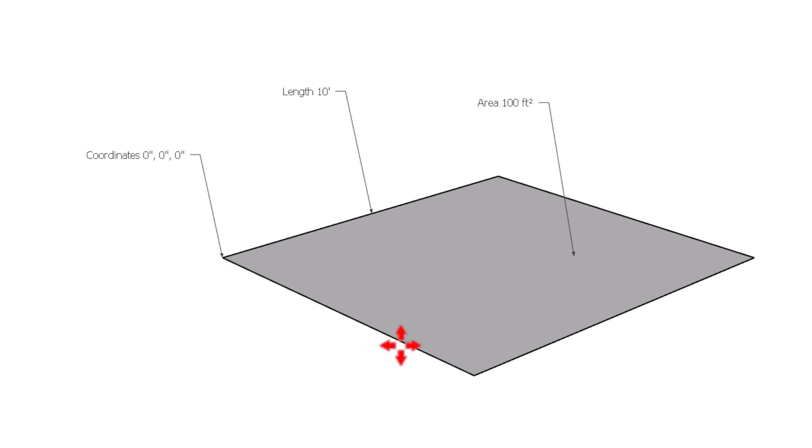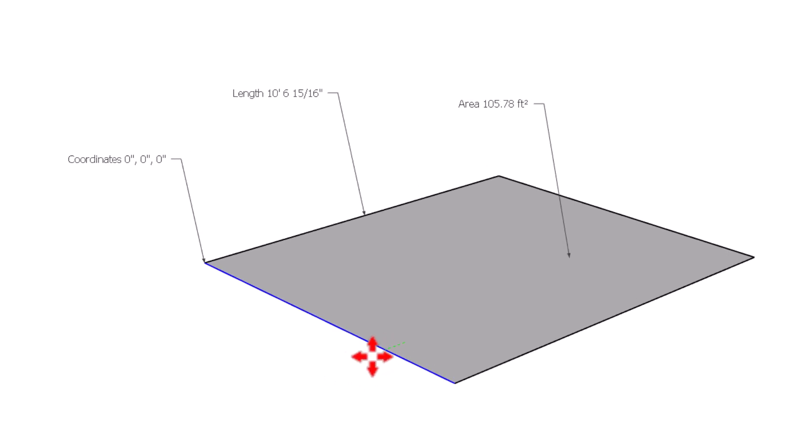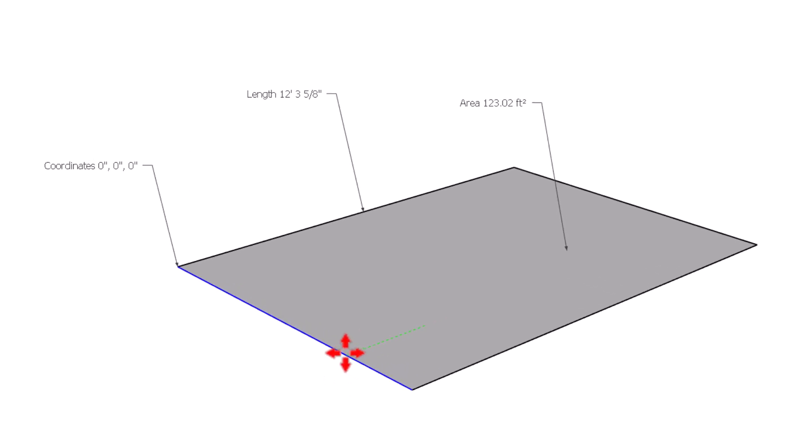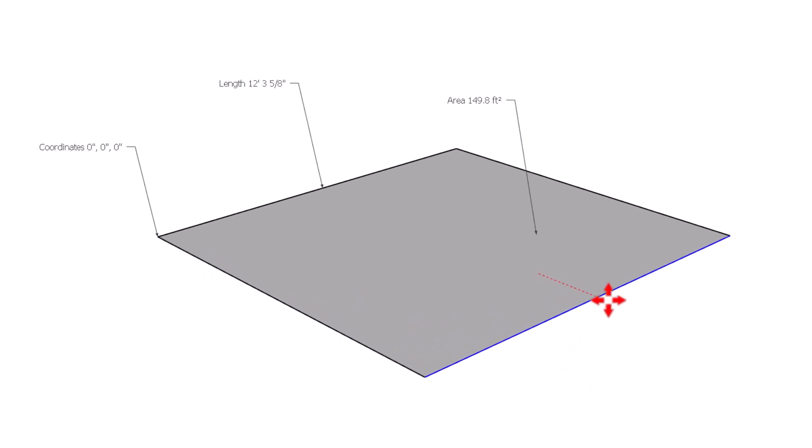Text in SketchUp now dynamically updates length, area, and coordinate values based on geometry changes. This is a very small improvement, but it's pretty slick. I could see this coming into play during the early stages of design when you're hung up on square footage calculations. I like it.